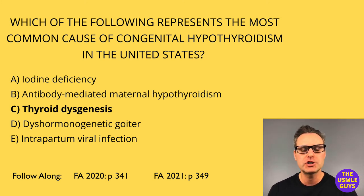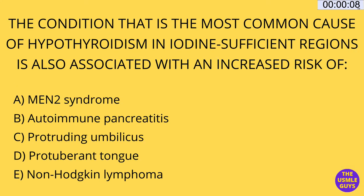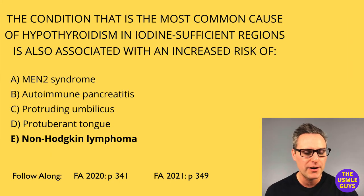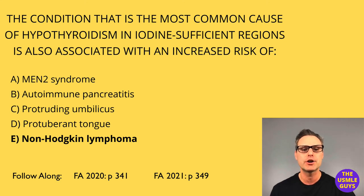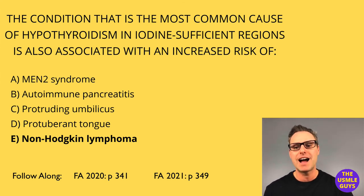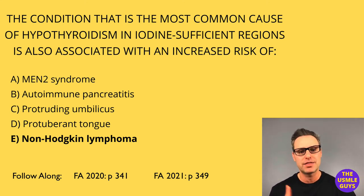Other common causes of congenital hypothyroidism can include antibody-mediated maternal hypothyroidism, iodine deficiency, as well as dyshormonal genetic goiter, which is caused by mutation in thyroid peroxidase. Next up, another question — go ahead and pause and come on back when you think you've got the right answer. The correct answer here is E, non-Hodgkin lymphoma.